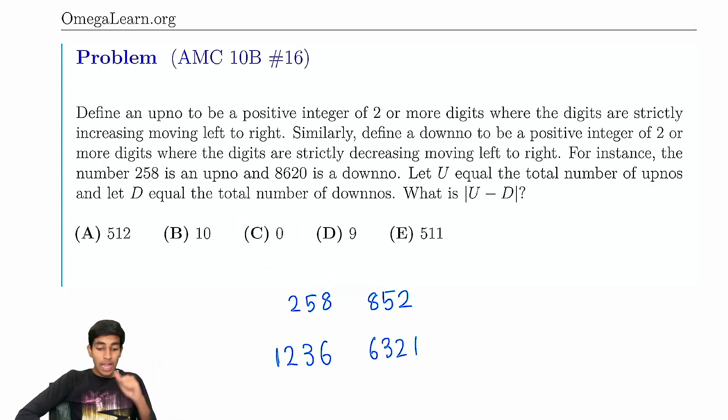Why? Because there are some downnos that exist that you can't just flip an upno from. For example, 8620. This is an example of a downno because when...